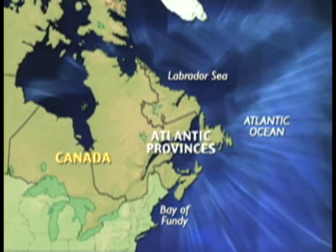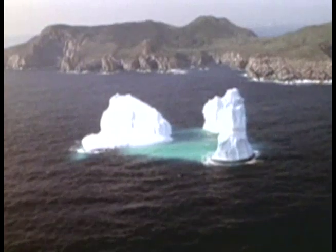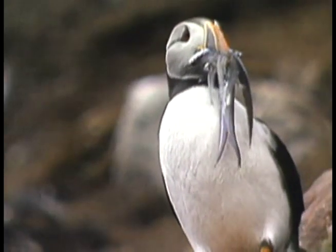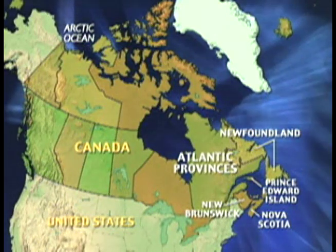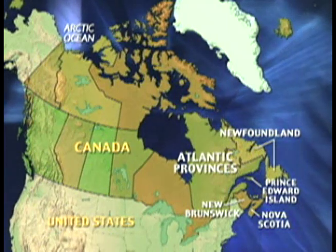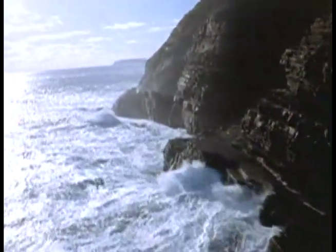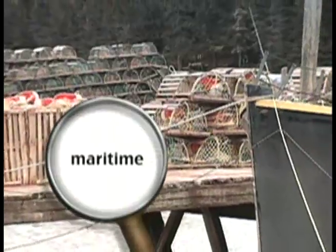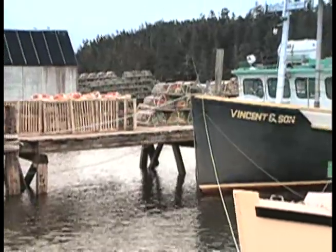Northeastern Canada is divided into four relatively small provinces. Here, the winters are harsh and the waters are cold, and it helps if you like fish. These are Canada's Atlantic Provinces: Newfoundland, Prince Edward Island, Nova Scotia, and New Brunswick. They are also called the Maritime Provinces — a fitting name for a region where it's hard to escape the influence of the sea. Maritime refers to navigation or commerce on the sea. Fishing and shipping are major industries here.